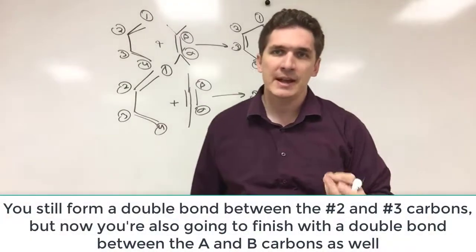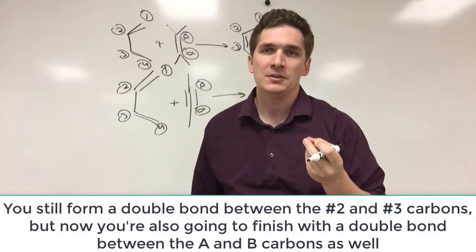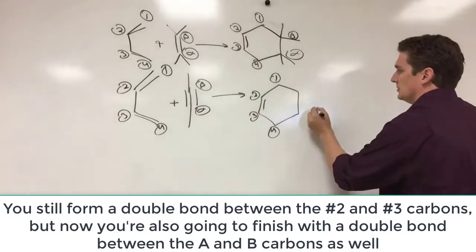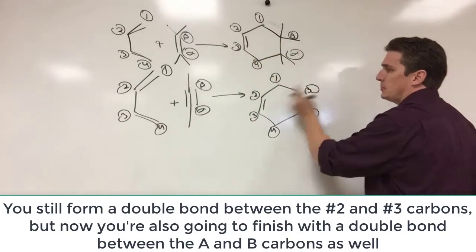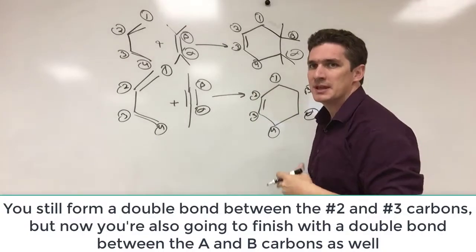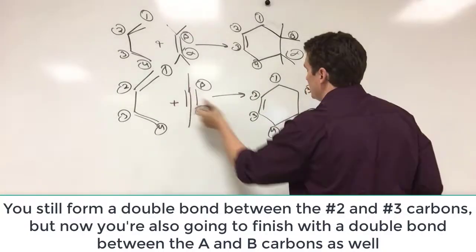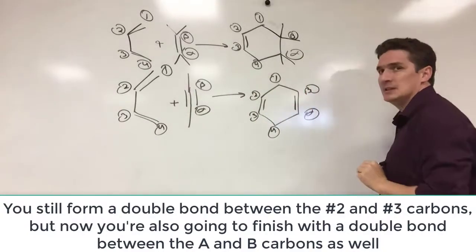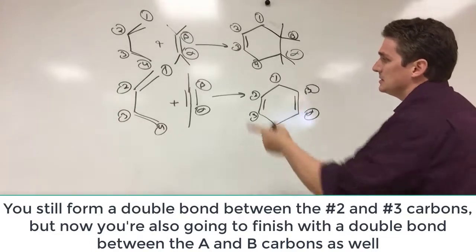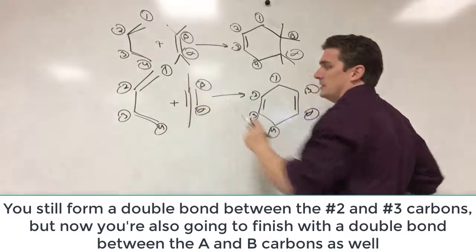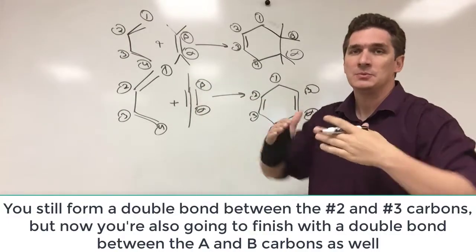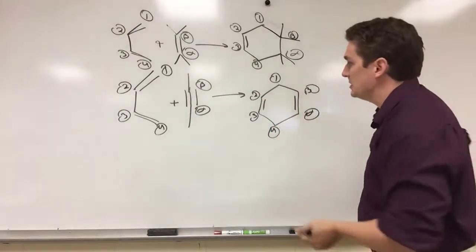But we're only going to detect one of the pi bonds on this alkyne. So on the side where we have our alpha beta carbons here, the ones that are from the alkyne, we're also going to have a double bond as well. And we're going to add this so that these two groups will end up cis to each other when this reaction is finished.